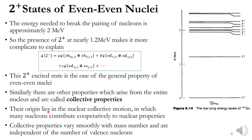The origin of these collective properties lies in nuclear collective motion, in which most of the nucleons contribute cooperatively to nuclear properties. The collective properties vary smoothly with mass number and are independent of the number of valence nucleons. Since it depends on almost all nucleons, it depends on the mass number — the total number of protons and neutrons — unlike the shell model, which accounted only for valence nucleons.